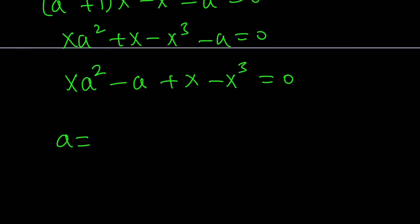So let's go ahead and use the quadratic formula. a equals negative b. b is the coefficient of a in this case. So 1 plus minus the square root of b squared, which is 1, minus 4ac. So that's going to be 4 times x times (x minus x to the third power). And all of that is going to be divided by 2a, which is 2x.